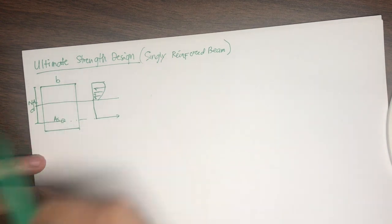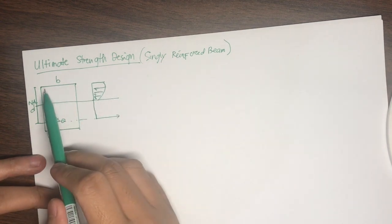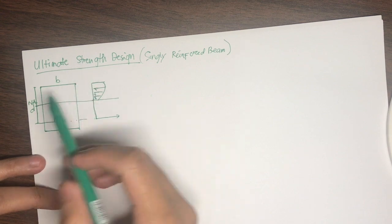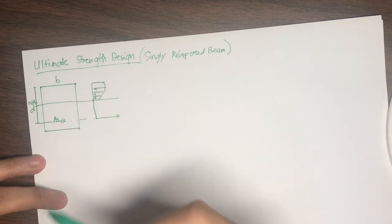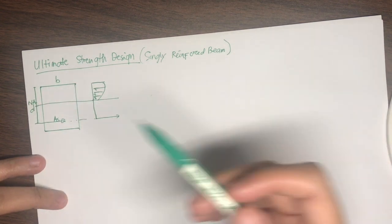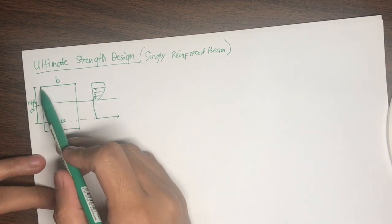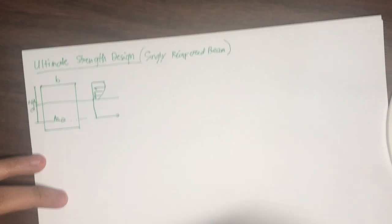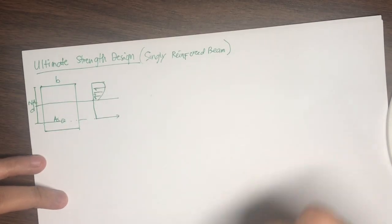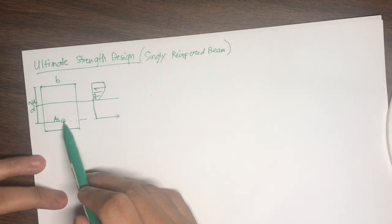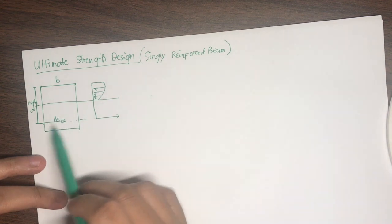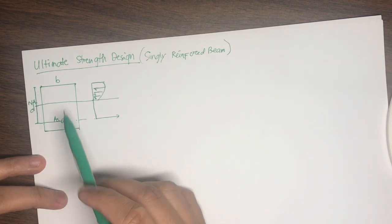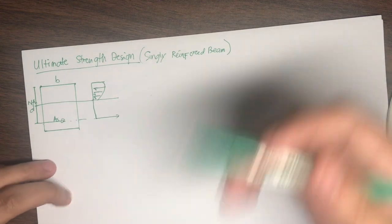We have the dimensions of the concrete beam: the width b (lapad ng beam), and the distance d which is what we call the effective depth. The effective depth is the distance from the outermost compression fiber down to the centroid of the reinforcement. So if there are two layers of reinforcement, d must be measured up to the centroid of those reinforcements.